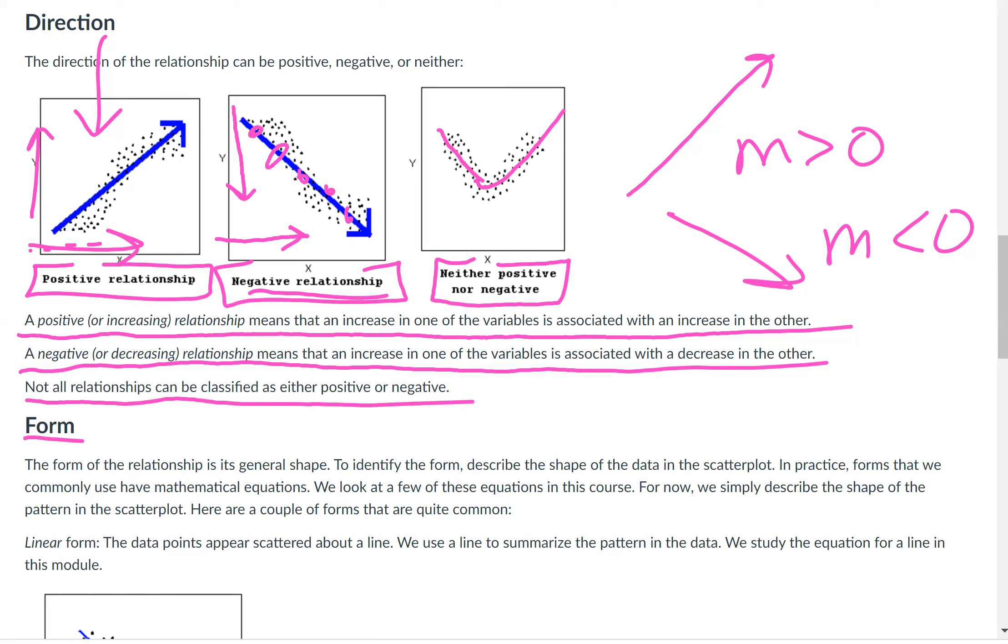Not all relationships can be classified as either positive or negative. Now we'll talk about the form. The form of the relationship is its general shape. To identify the form, describe the shape of the data in the scatter plot. In practice, forms that we commonly use have mathematical equations. We look at a few of these equations in this course. For now, we simply describe the shape of the pattern in the scatter plot. Here are a couple of the forms that are quite common. First, linear form. That's what we've been talking about. It looks like a line instead of a curve.